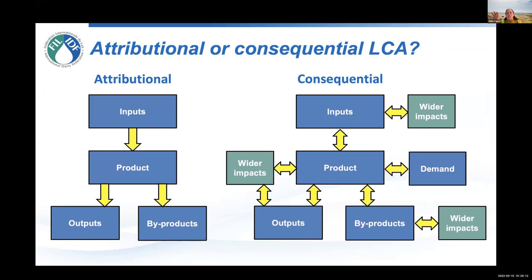In terms of attributional versus consequential, the LCA guide recommends attributional. That's basically the simpler version: we have the inputs, the product, and then the outputs and the byproducts. We might do this, for example, to calculate the greenhouse gas emissions associated with a kilo of 4% fat milk. Consequential is far more complex because it takes into account demand and all of the wider impacts. You might use consequential if you wanted to ask: what happens if we increase milk production and people stop drinking milk alternatives by 50%? What are the impacts on land use, water use, eutrophication, carbon, etc.? If we use attributional, we then have to think about allocation — i.e. allocating the greenhouse gas emissions, the inputs and the outputs from byproducts as well.